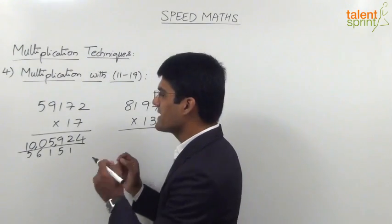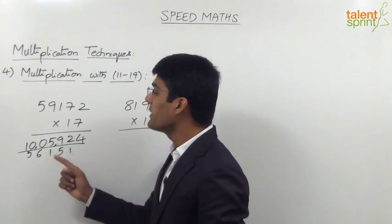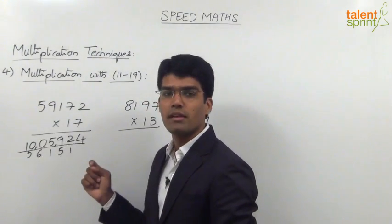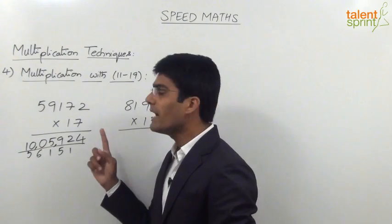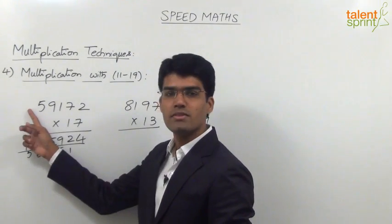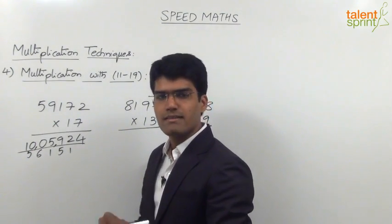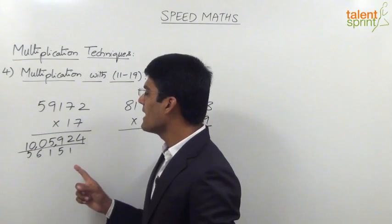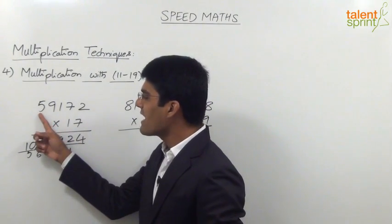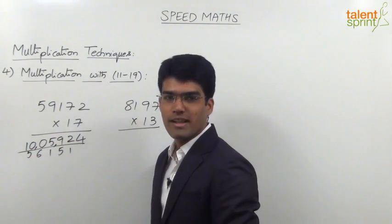From this example you can understand that it is not really required to put a 0 before the number. If you can remember that the last step is to multiply with 0, that's enough. Or simply remember that in the last step we have to add the last digit with the carry to get the required answer.